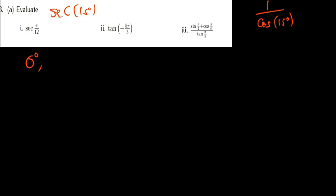The special angles we have are 0, 30, 45, 60, and maybe 90. The best combination is that 45 minus 30 equals 15. So I'll write cos(45° - 30°).